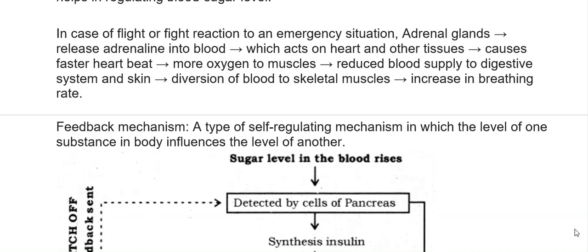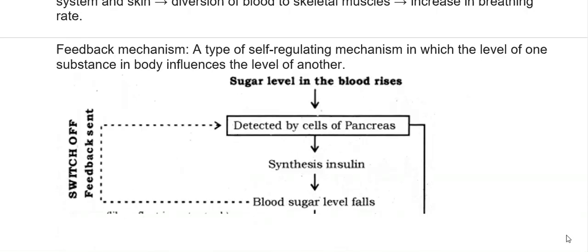In the fight-or-flight reaction to an emergency situation: adrenal glands release adrenaline into the blood, which acts on the heart and other tissues, causing faster heartbeat, more oxygen to muscles, reduced blood supply to the digestive system and skin, diversion of blood to skeletal muscles, and an increase in breathing rate. Feedback mechanism is a type of self-regulating mechanism in which the level of one substance in the body influences the level of another.